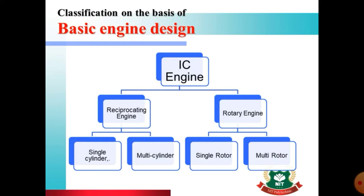These two types of engines are mostly used in maximum applications. A reciprocating engine is one that has a reciprocating component by which power is generated. In some cases, a rotary engine is used — a rotary engine uses rotary motion to convert heat energy into mechanical energy. In rotary engines, there are two types: single rotor and multi-rotor.